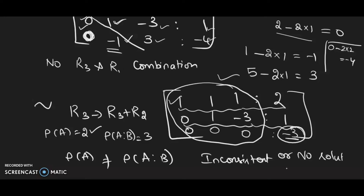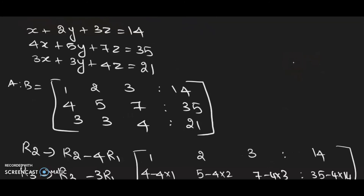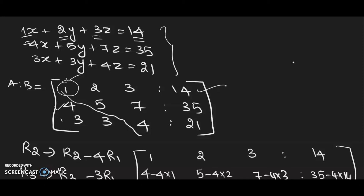Now let's look at a problem with infinite solutions. We write the augmented matrix for the new set of equations. The coefficients are: row 1 has 1, 2, 3 with constant 14; the other two rows are filled in similarly. As per Gauss elimination, we need the pivot to be 1, which it already is, so we eliminate the elements below it. We apply R2 → R2 − 4R1 and R3 → R3 − 3R1.